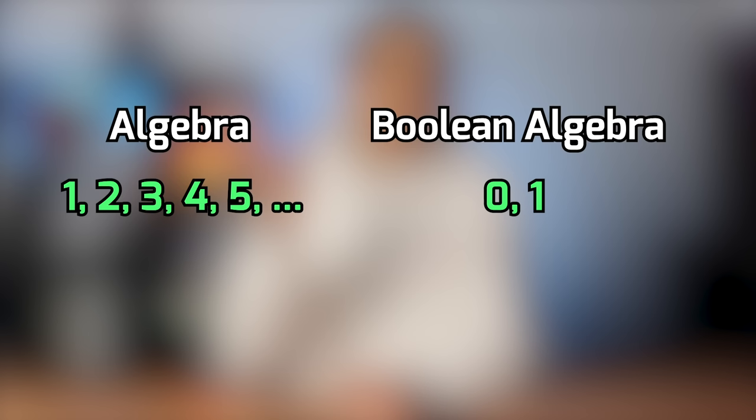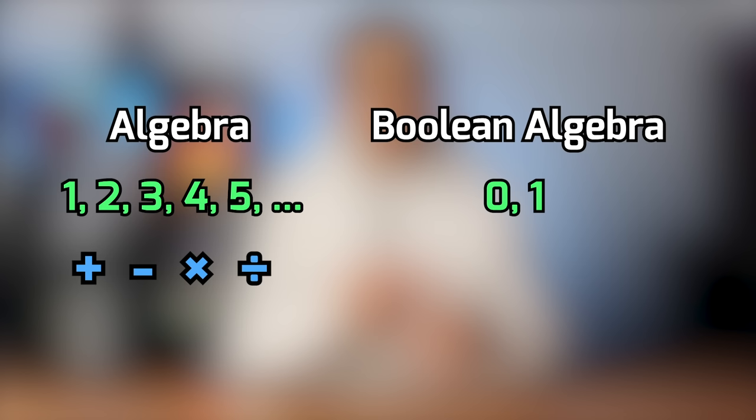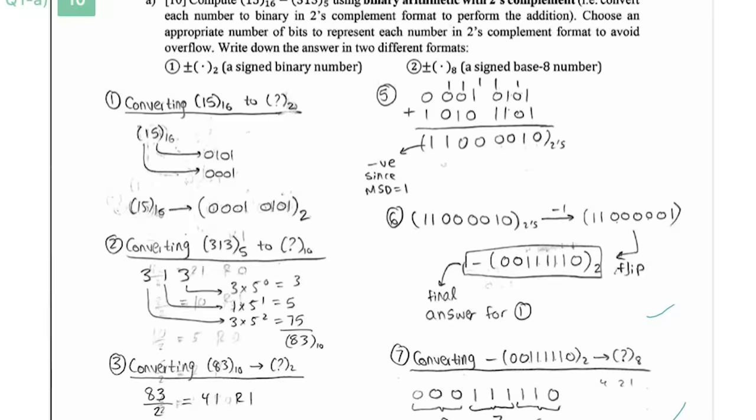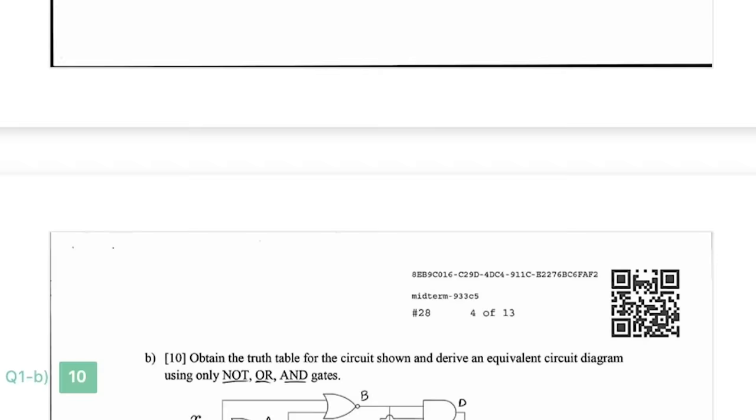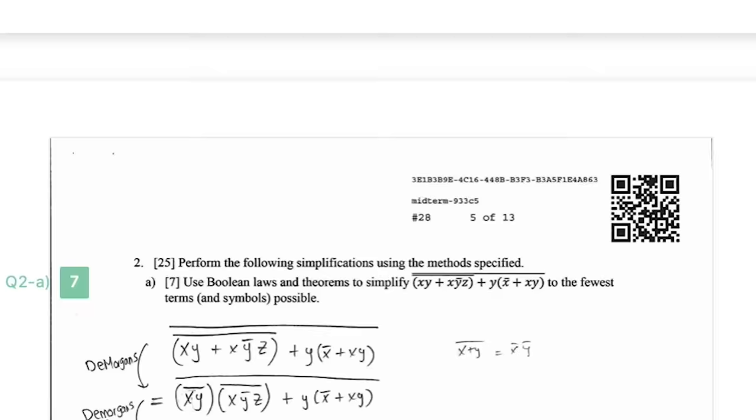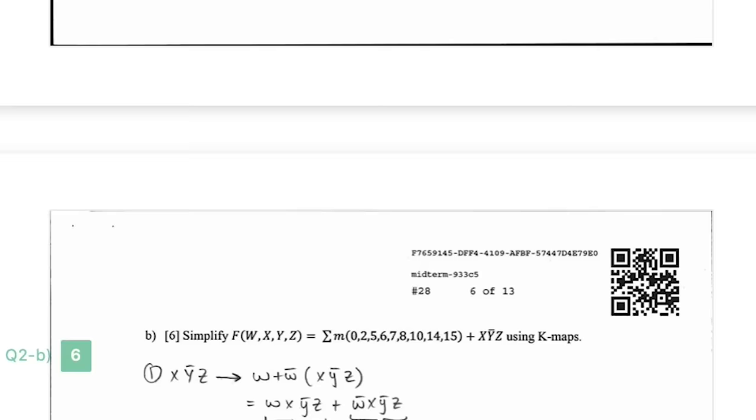Boolean Algebra and Digital Logic: in regular algebra a variable can be any number, but in Boolean algebra a variable can only be one or zero, which is really important when working with electronics. Instead of addition, subtraction, or multiplication, Boolean algebra uses operations like AND, OR, and NOT. This course is really common with electrical, computer, and software engineering students, and some mechanical engineers may have to take it depending on their university.